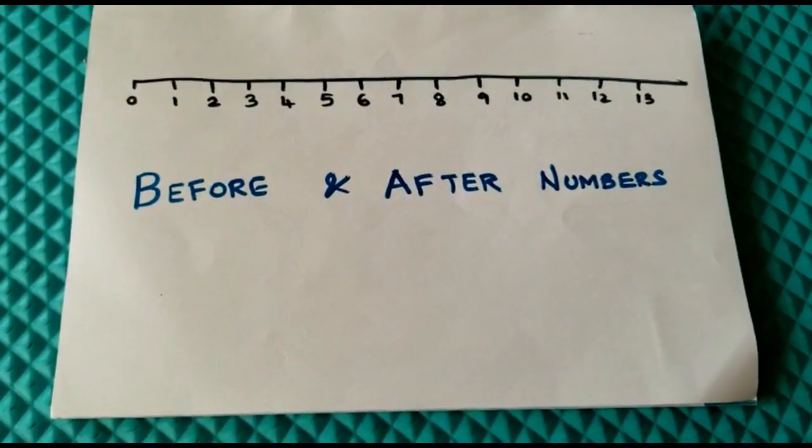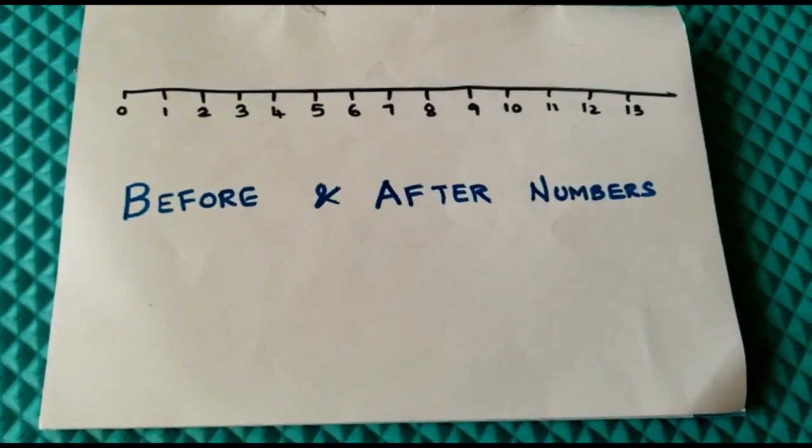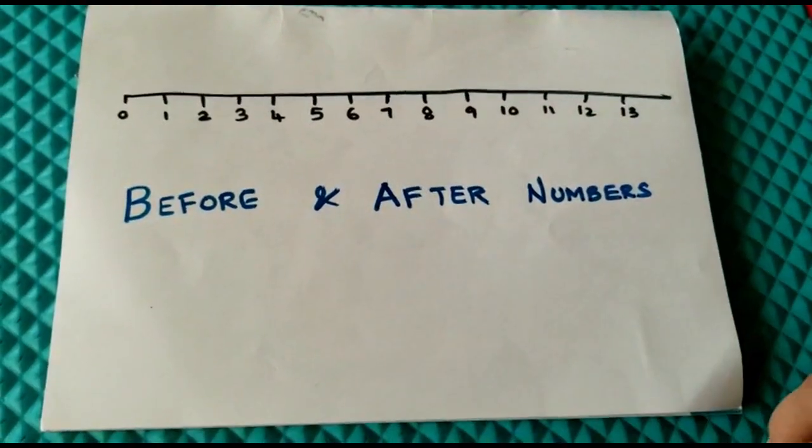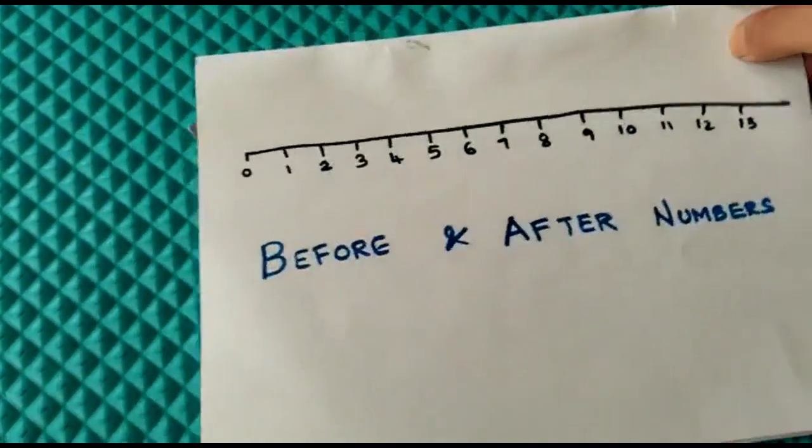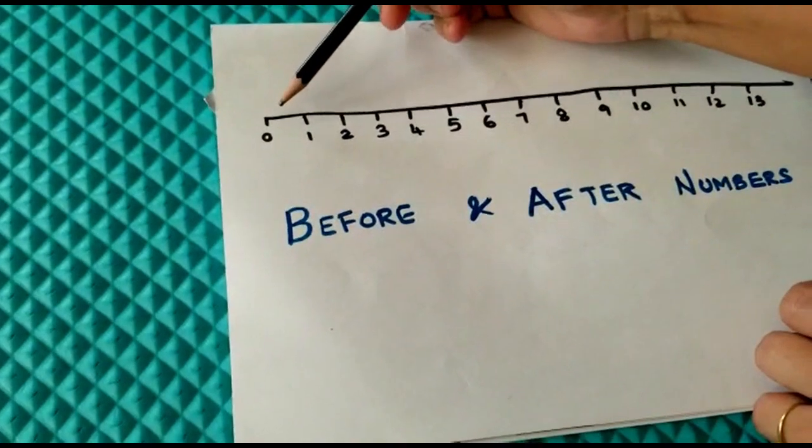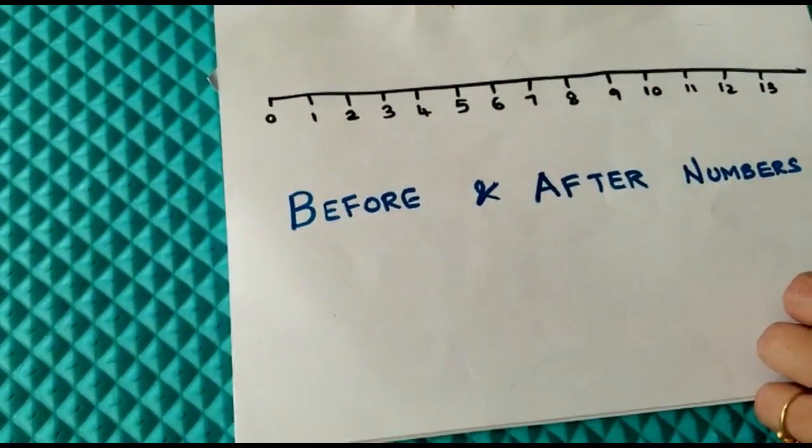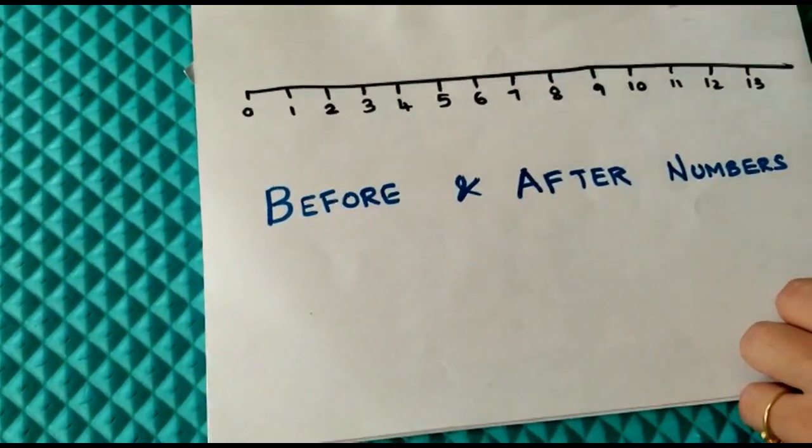This before and after numbers is a pre-math skill which helps in addition and subtraction for the kids very easily. So to start off with, we can teach them using the scale, or like this we can draw a line.